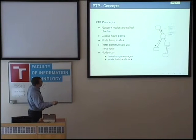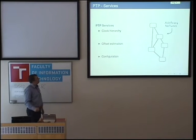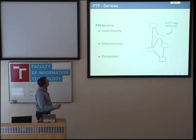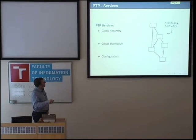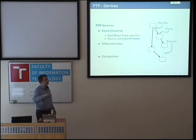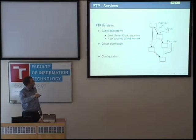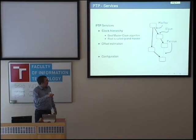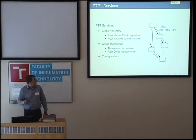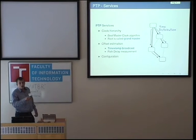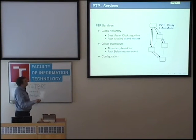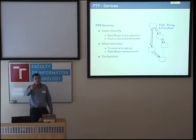PTP also assumes that the local clock is scalable. So if you plug together some arbitrary PTP nodes, the first thing they will do is establish a clock hierarchy. A ring will be broken up and you will always get a tree. Ports will be master or slave, and all these clocks will be synchronized to the master. To break up rings, some ports may go into a passive state. The actual synchronization is done by time distribution: master ports will send sync frames, and slave ports will carry out the path delay estimation. When a slave receives a sync frame from a master, it can estimate how long the message has been on its way. PTP also provides a configuration interface.